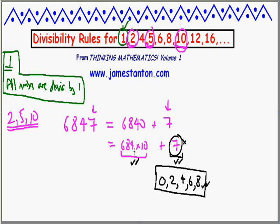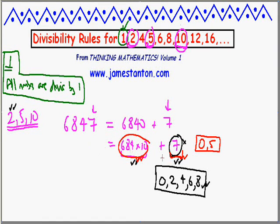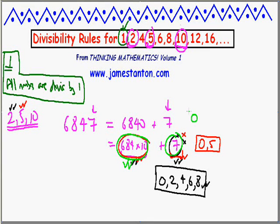By the same reasoning, to check for divisibility by 5: a multiple of 10 is already a multiple of 5, so that part is taken care of. You just check whether the final digit is a multiple of 5 — namely 0 or 5, the only two single digits that are multiples of 5. Since 7 isn't, 6,847 is not divisible by 5. For divisibility by 10, a multiple of 10 is already taken care of, and the only single-digit multiple of 10 is 0 itself — so check if the final digit is 0.